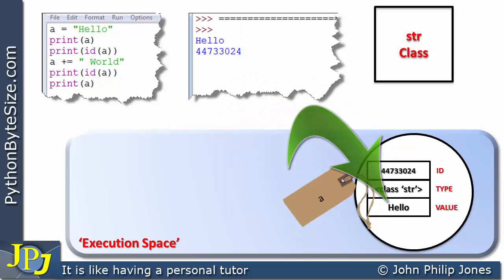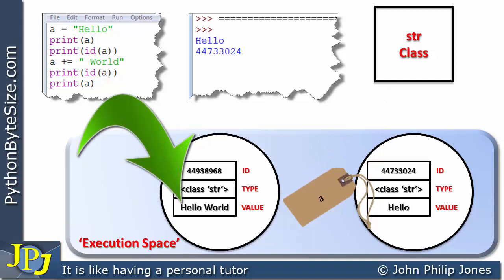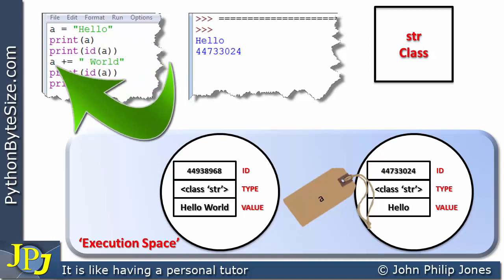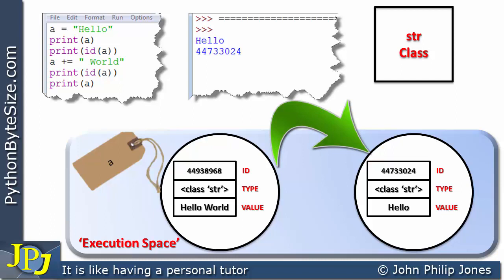What's actually going to happen is Python is going to create another instance, and this instance is going to take the value of hello world. Consequently, we're now going to see that this new object is going to be bound to A. So this label is moved to here, and of course the other object, the first one we created, is not bound to anything.